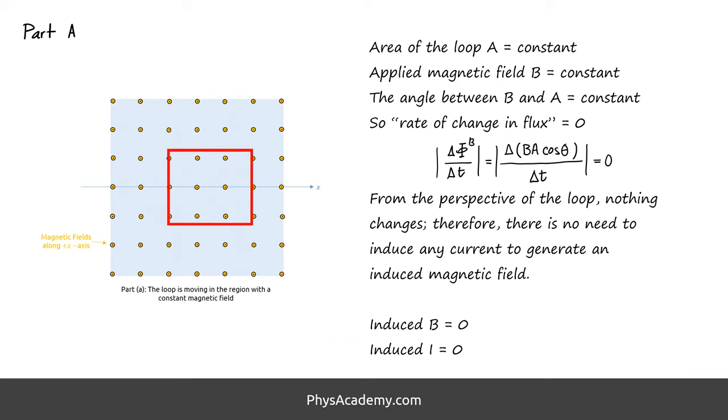This animation illustrates the state of the loop for part A. Throughout this motion, the area, enclosed magnetic field in the loop, and the angle between the loop and applied magnetic field remain the same. So, as you see, from the perspective of the loop, nothing changes.